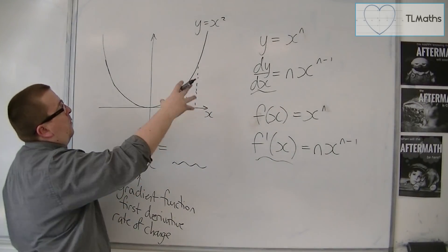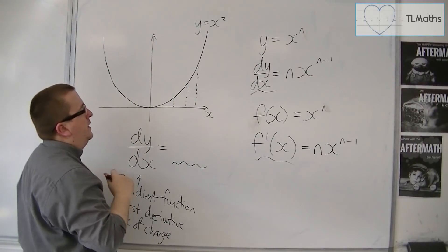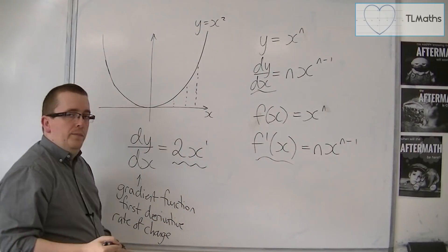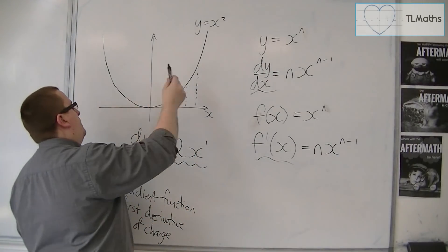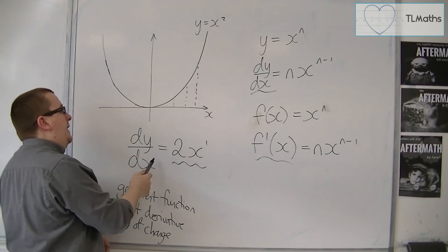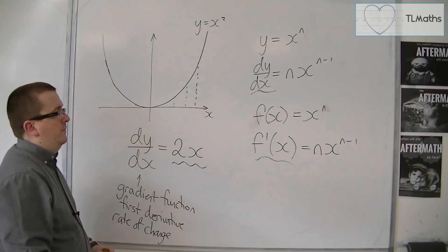So if we've got y equals x squared, we bring the power down to the front and take 1 off the power. So the derivative, the first derivative of y equals x squared is 2x.